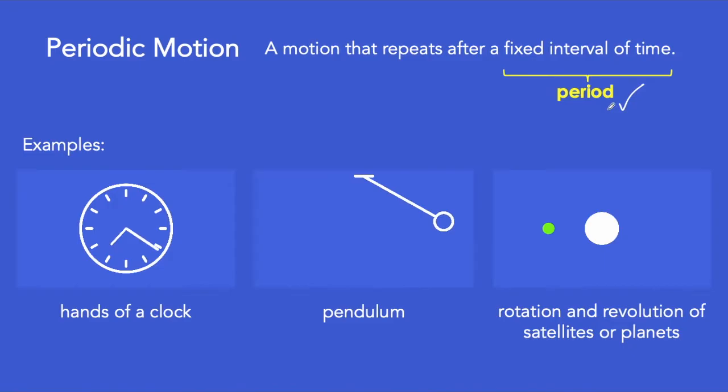Later, we symbolize period with capital T. The period of the shorter hand of the clock is 12 hours while the longer hand is 1 hour.